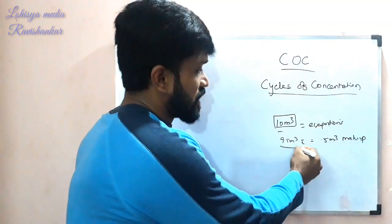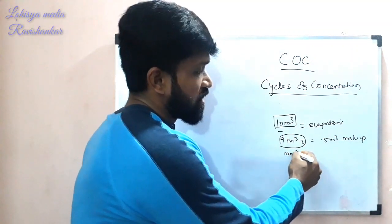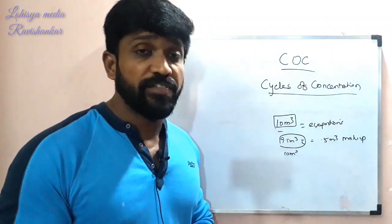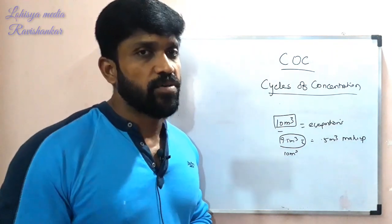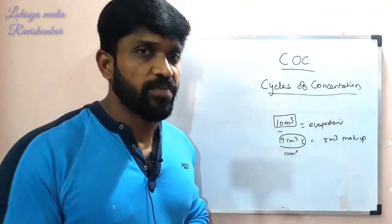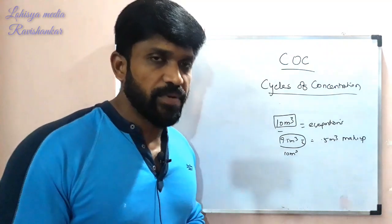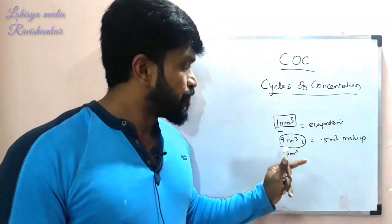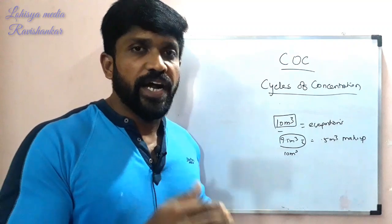You maintain the system at 10 cubic meters by adding makeup water. The evaporated portion — approximately 0.5 cubic meters — is replaced each cycle.